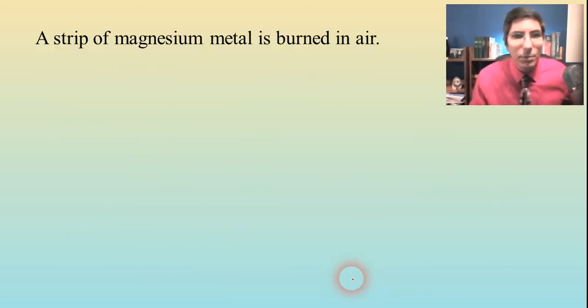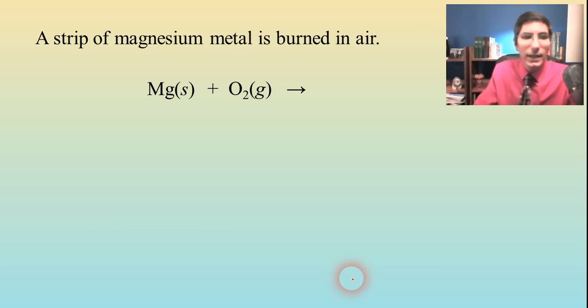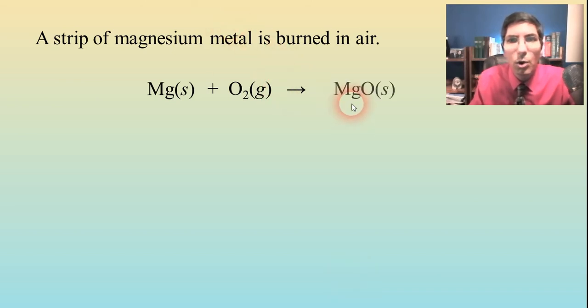Let's try another example. A strip of magnesium metal is burned in air. Anytime you take a metal like magnesium and burn it in air, that just means that you're reacting it with oxygen gas. So burning something, if you see that on a test or on a homework, burning something just reacts it with oxygen.